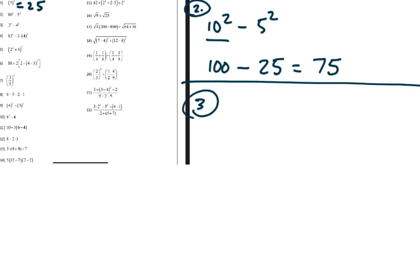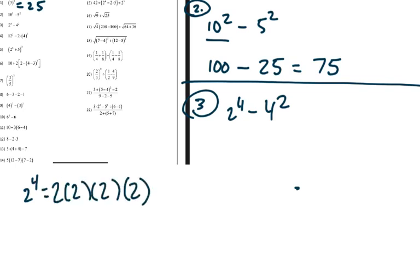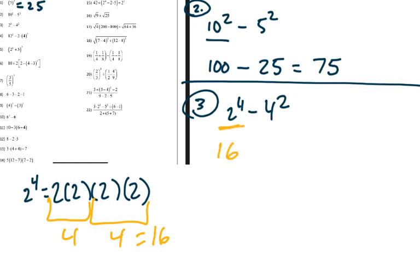Number three is 2 to the 4th minus 4 squared. 2 to the 4th means 2 times 2 times 2 times 2 — multiplying four 2s together. 2 times 2 is 4, and 4 times 4 is 16. And 4 squared is 4 times 4, which is also 16. So the answer is 0. Notice I did the exponents first, then subtracted — you have to do it that way.